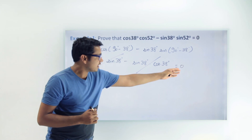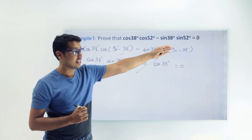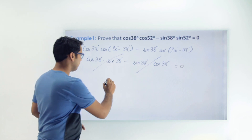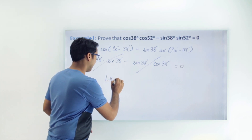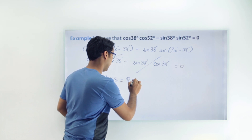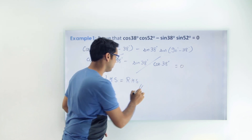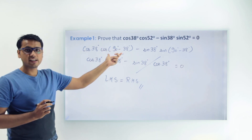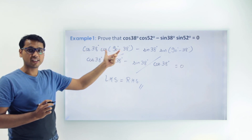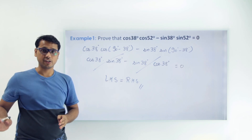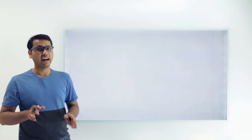On the left hand side we got zero, and on the right hand side we had zero. So we have proved that LHS equals RHS. Hence we proved it by changing these trigonometric ratios into their complementary trigonometric ratios. Let's move to the last example of complementary angles.